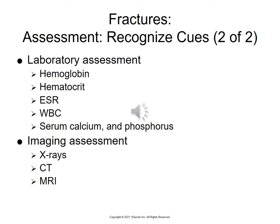For laboratory assessment, the H&H will be low. The sedimentation rate will be high due to the inflammatory response. Elevated WBCs indicate infection. Serum calcium and phosphorus will be high during healing because bones use those minerals to build bone. For imaging, X-rays are primary, but CT scans and MRIs may also be done.